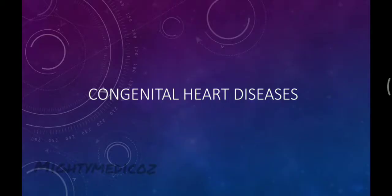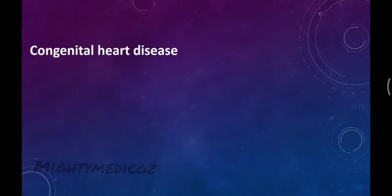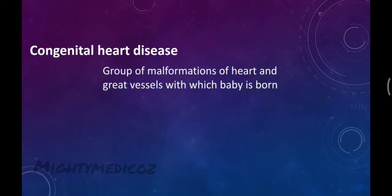Congenital Heart Disease is defined as a group of malformations of the heart and the great vessels with which the baby is born. This includes defects of either the heart or great vessels such as the aorta, pulmonary artery, and pulmonary veins. It is called Congenital Heart Disease.